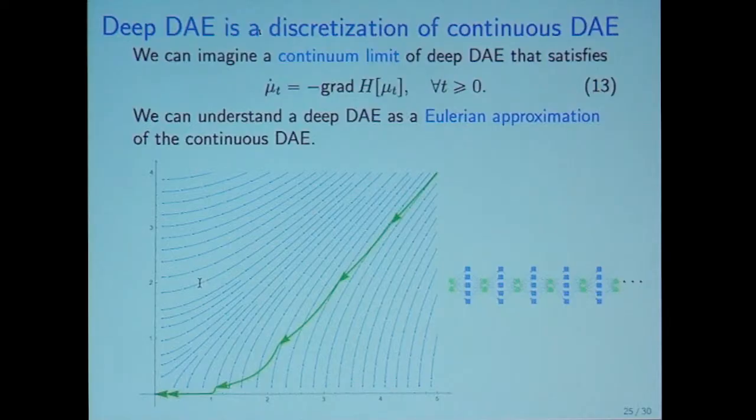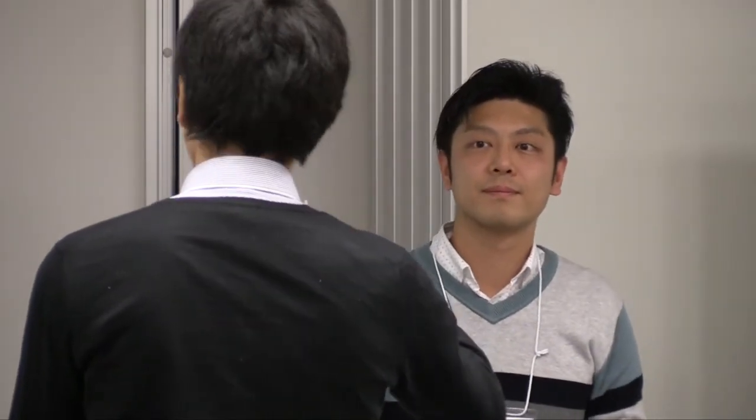Can you give some discretization error analysis? For example, maybe we want to approximate the delta G by some neural networks. Can you say something about that? Yes. I did not evaluate error, but the strategy is to estimate the curvature of this gradient flow and this trajectory. Then we can estimate the error.